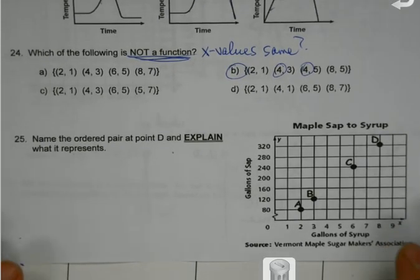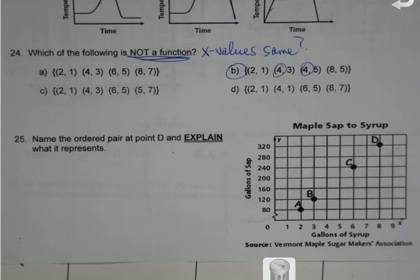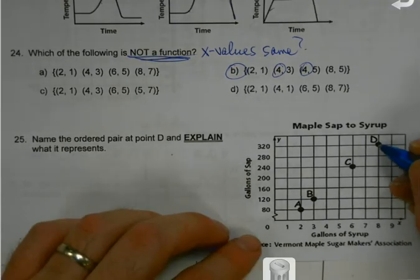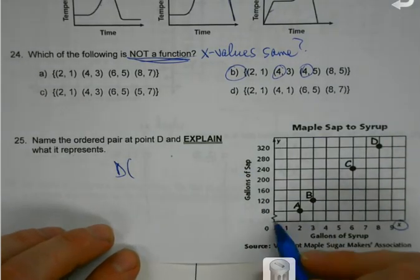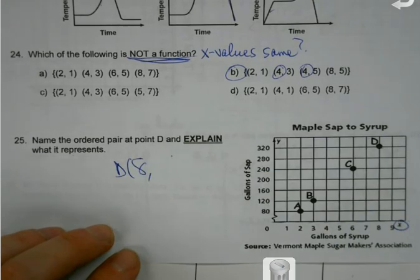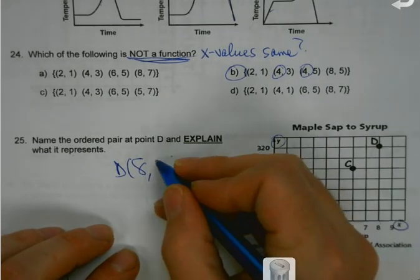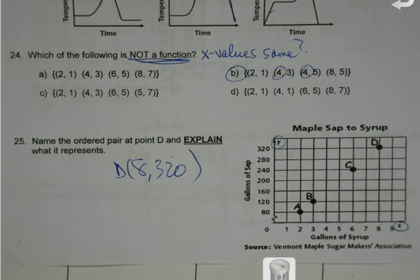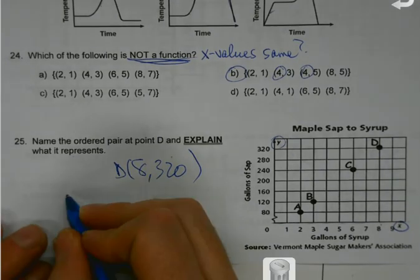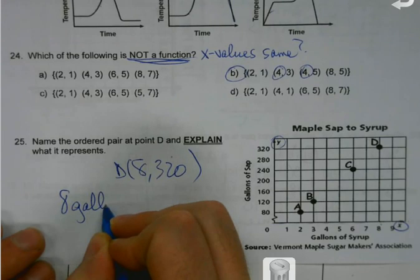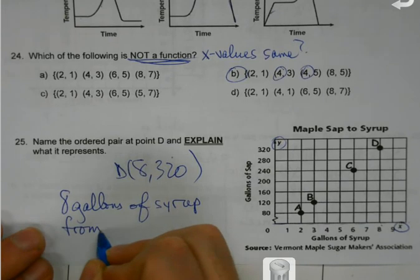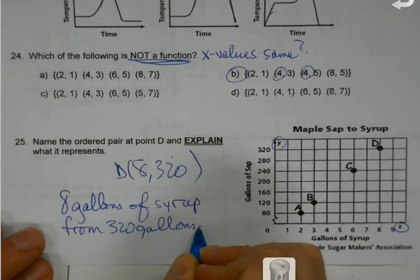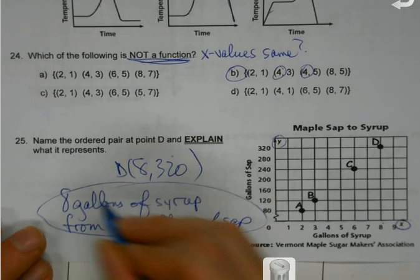Name the ordered pair at point D and explain what it represents. What are my coordinates for point D? Here's my x — that always goes first — 8. Here's my y, 320. So what do 8 and 320 mean? It takes 8 gallons: you get 8 gallons of syrup from 320 gallons of sap from a tree.